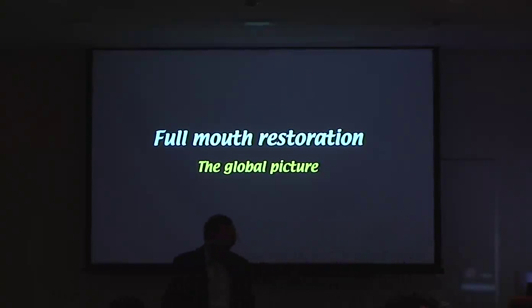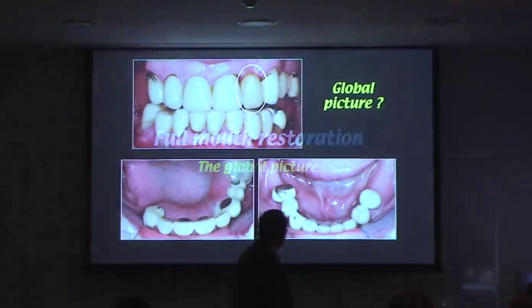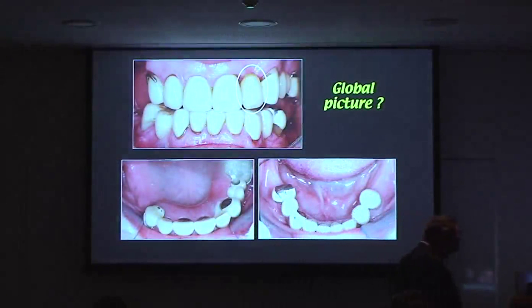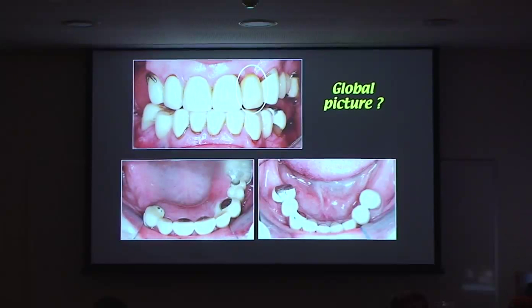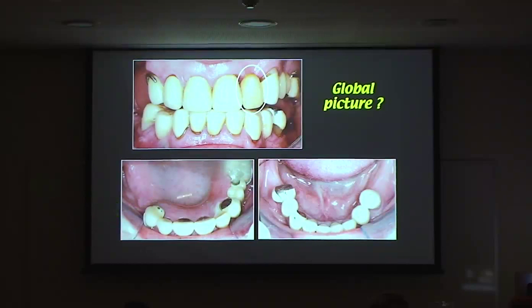Let me just show you a few of the bigger cases. One of the things I talk about is the so-called global picture. This patient's interesting because they came in wanting an implant or a bridge for this lateral, and that was their referral. In the meantime, they've got a partial for that, with no teeth at the back for the partial. There's the lower arch.